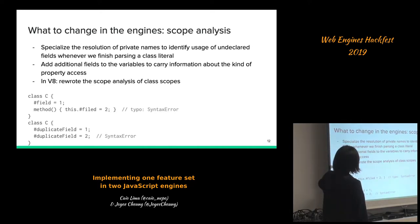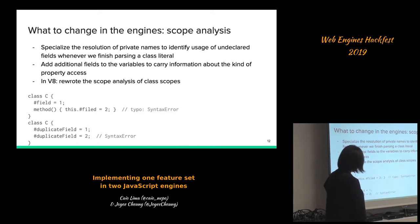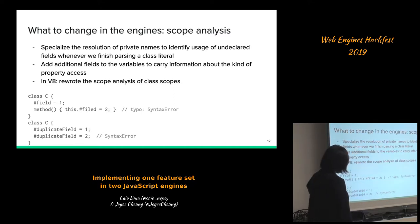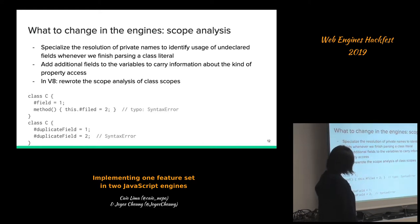To implement this we need to add additional fields to variables to carry information about the kind of property access — for instance, to record that this is a private property access. In V8 we needed to rewrite the scope analysis for class scopes, which were previously implemented the same way as normal block scopes. Also, with private names, duplicate field declarations now throw a syntax error — this is also identified during scope analysis.